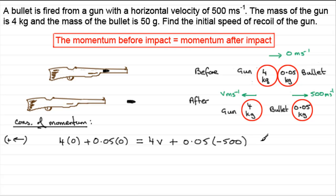Now if we work this out, what we've got over here is 0, so this comes to 0. We've got 4V, and then we've got 0.05 times minus 500, which is minus 25. Rearrange this equation. By adding 25 to both sides, you get 25 equals 4V. Then if we divide both sides by 4, you end up with V equaling 25 divided by 4, which is 6.25 meters per second.